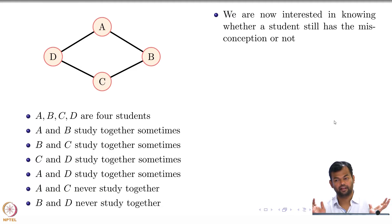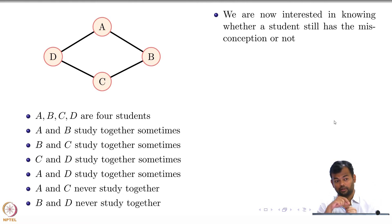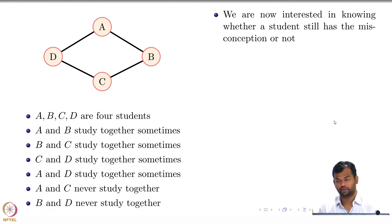We are interested in knowing for every student whether that student still has the misconception or not. Think of that diagram we have — the set of students — and you want a random variable for each. We will have random variables A, B, C, D which tell us: whether student A has a misconception or not, student B has a misconception or not, student C has a misconception or not, and student D has a misconception or not.